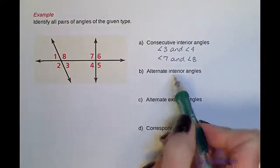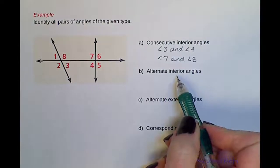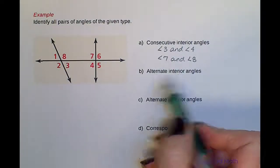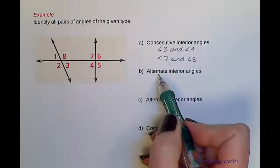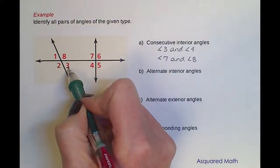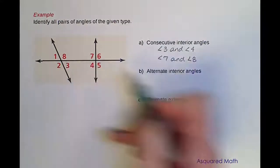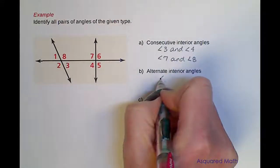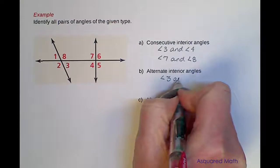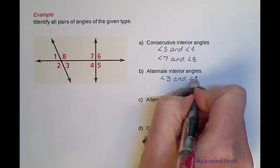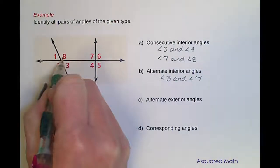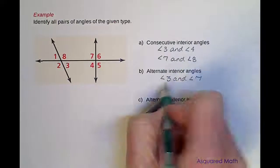Part B: alternate interior angles — interior is the key word, and alternate means opposite sides. Angle 3 and angle 7 are alternate interior angles, as well as angle 4 and angle 8.